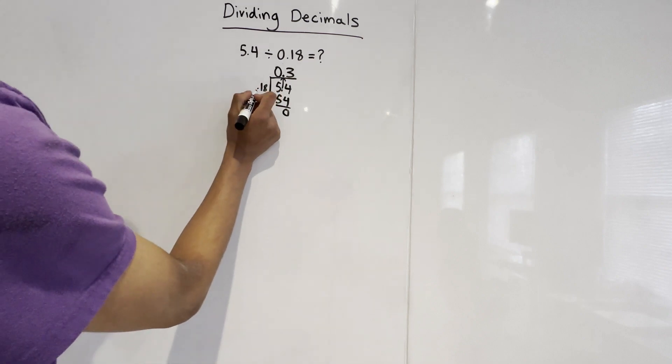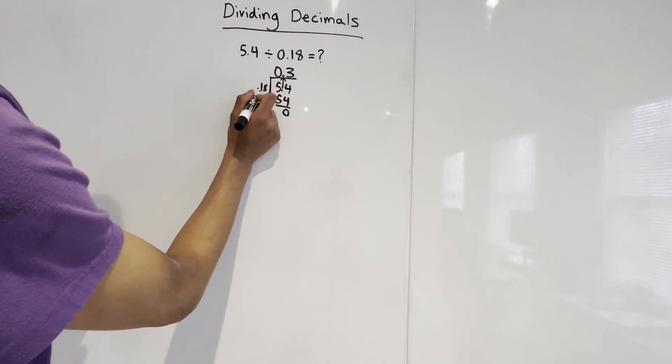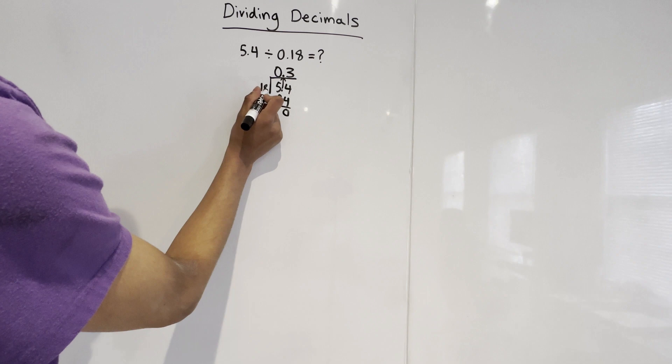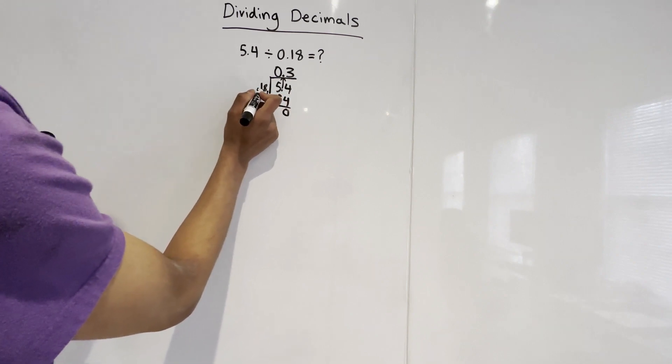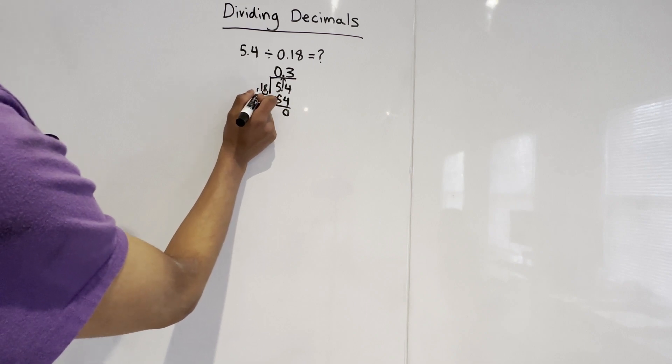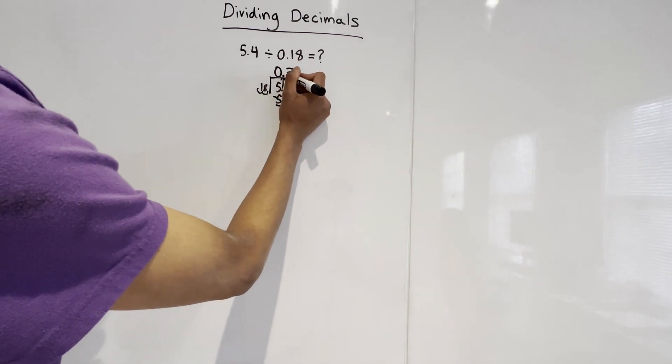And now we're going to pay attention to this 0.18. And what we're going to do is bring this decimal point all the way to the end. And to do that, we have to move it two spaces to the right. And because we moved it two spaces to the right, whatever we have to do over here, we do on the top.